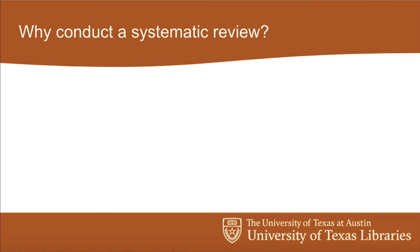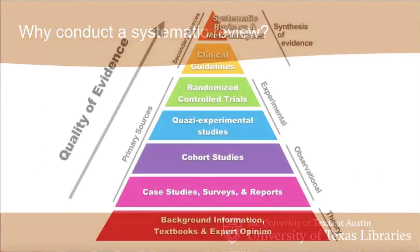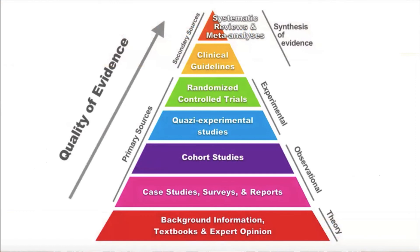Thinking through why we would want to conduct a systematic review — many of you are probably familiar with the evidence pyramid, and there are a lot of different versions of this. The one I use is a little more focused on the social sciences and specifically clinical work, with clinical guidelines at the top. At the top of this pyramid is systematic reviews and meta-analysis. When we're talking about evidence-based practice and want the highest quality of evidence, that's when we turn to the systematic review and meta-analysis methodology.